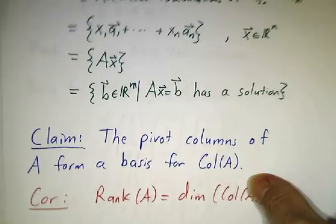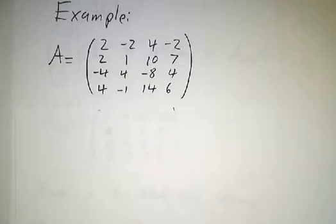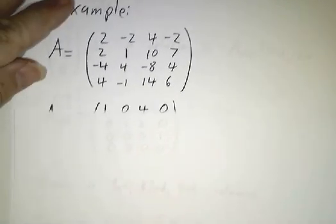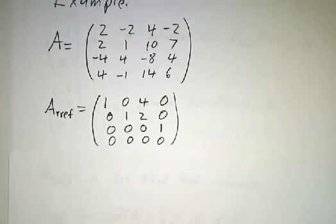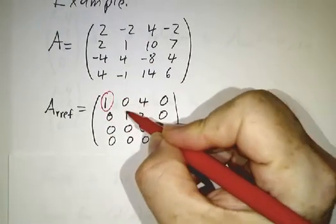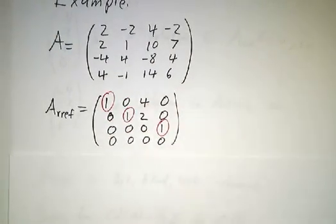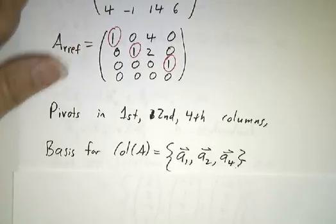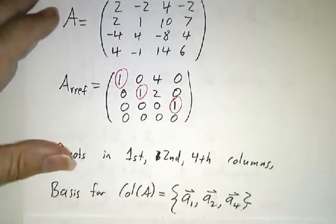Let's do an example — our running example where A is given by this matrix. As we've worked out several times, you put it in reduced row echelon form and get this matrix, and you say: I've got a pivot in the first column, second column, and fourth column. So we call the first, second, and fourth columns the pivot columns. Our basis for the column space is going to be the first, second, and fourth columns.